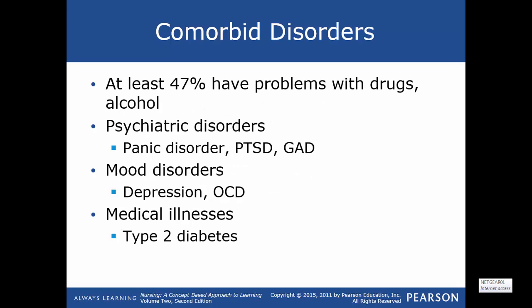Comorbid disorders include substance use — at least 47% have problems with illicit drugs and alcohol, and smoking has also become more prevalent. Psychiatric disorders include panic disorder, PTSD, and generalized anxiety disorder. Mood disorders include depression and OCD. Medical illnesses include type 2 diabetes, which develops twice as often in this population as in the general population.